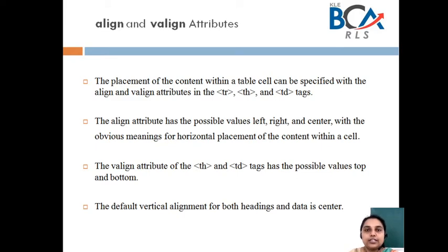Today's session we will study some attributes related to tables, that is the align and valign attributes. The placement of the content within a table cell can be specified with the align and valign attributes. These two attributes can be specified in the table row tag, table data tag, as well as the table header tag. The align attribute is going to have three values: left, right, and center, with the obvious meanings for horizontal placement of the content within the cell.